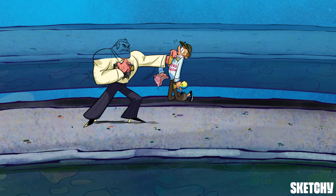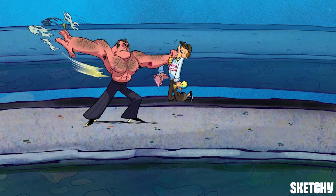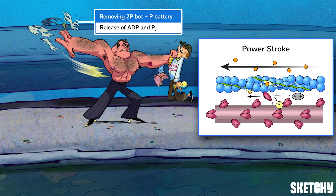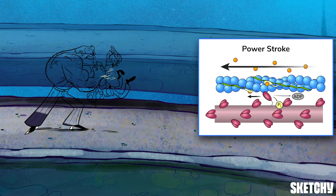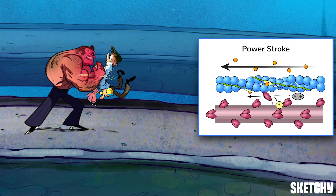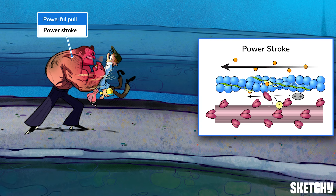Along with his shirt, Mr. Myosin tossed the bot and P batteries because once myosin binds actin, myosin releases its bound ADP and phosphate. This triggers a power stroke. During the power stroke, myosin pulls on actin, drawing them closer together — just like how the myosin mobster pulls Slim close. As a result, the sarcomere shortens and the muscle starts to contract.